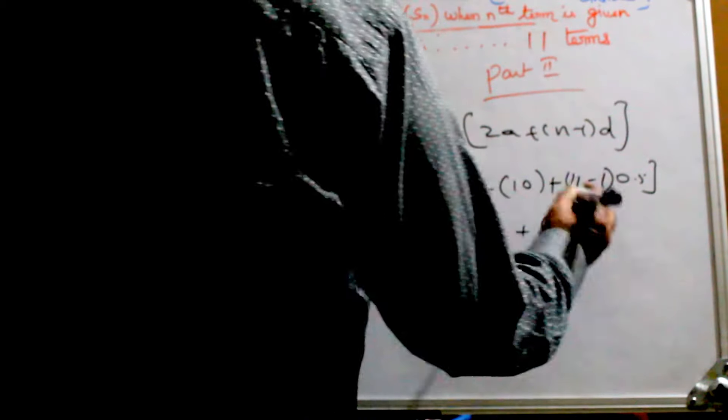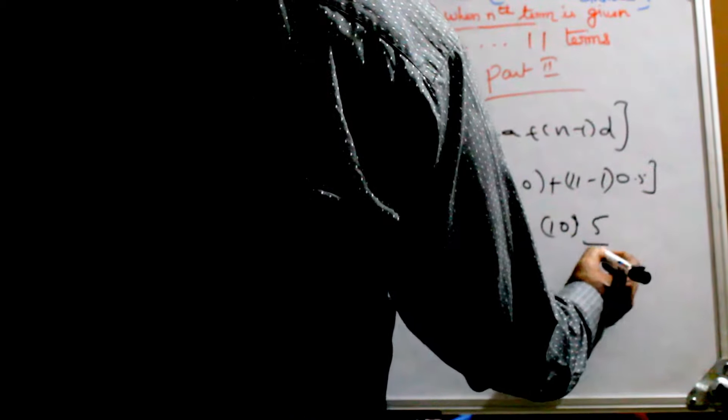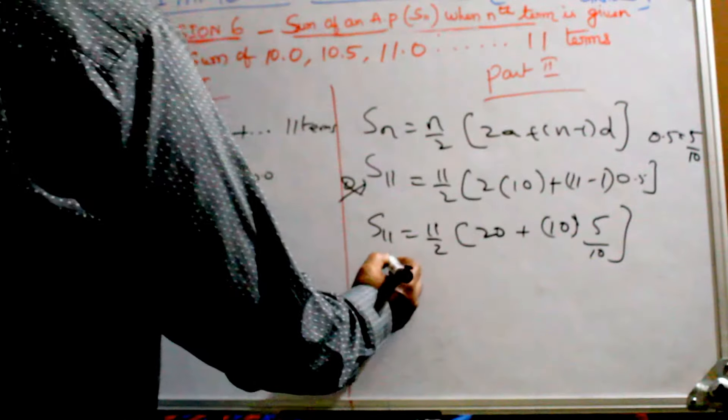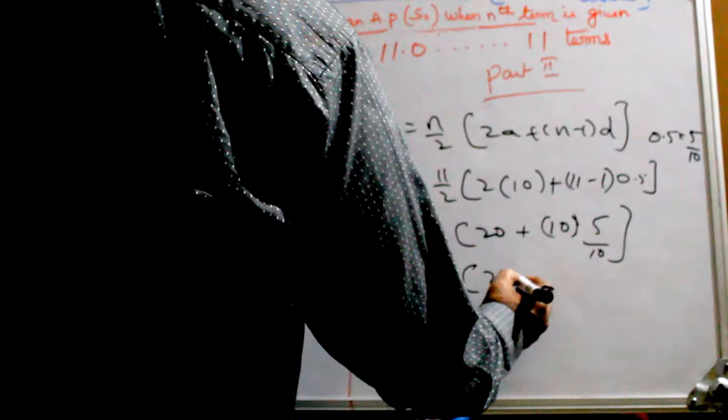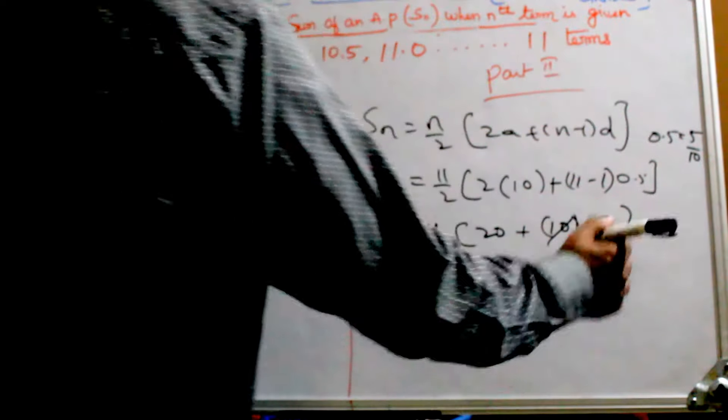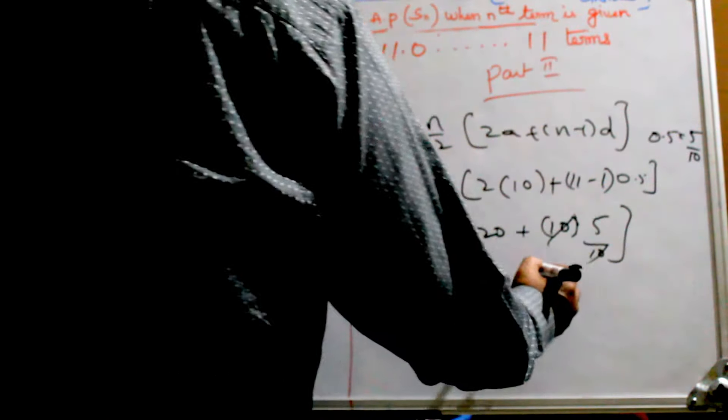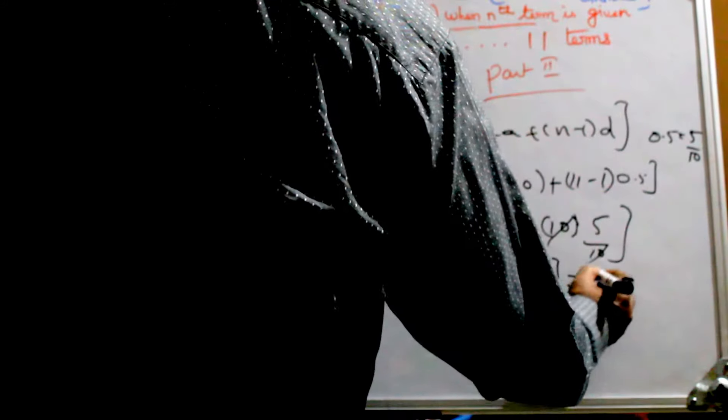If you want, you can put 0.5 as 5/10. 0.5 is 5/10 in fraction form. So S11 equals 11/2 times 25.